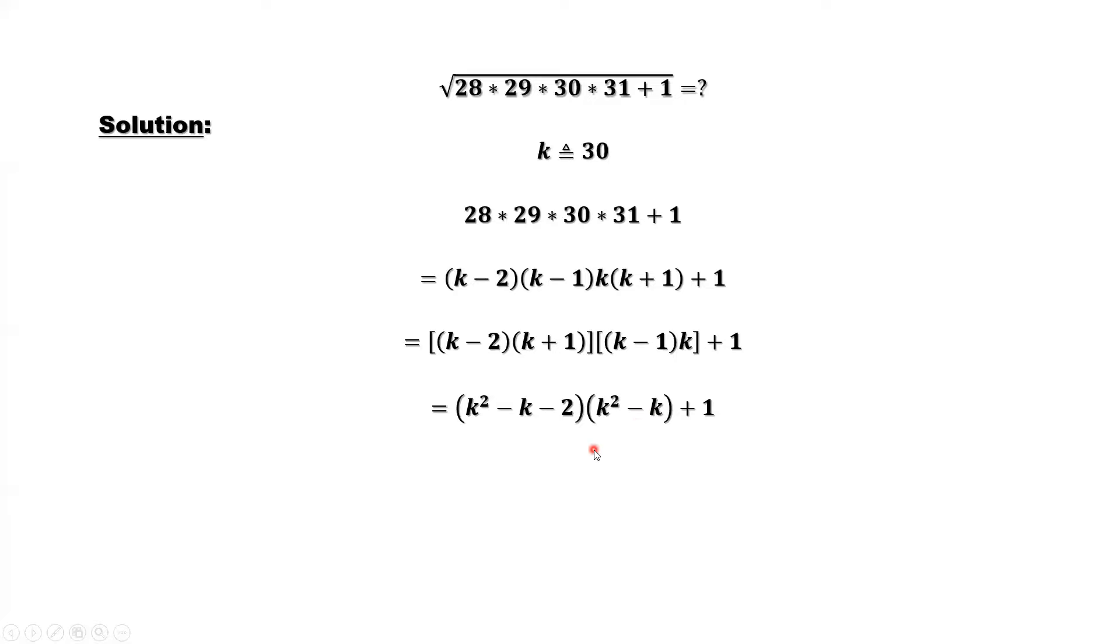Look at this product. The first factor, we have k square minus k. We can see that k square minus k is one variable. Simplify this. k square minus k times k square minus k is k square minus k square. k square minus k times negative 2 is negative 2 times k square minus k.